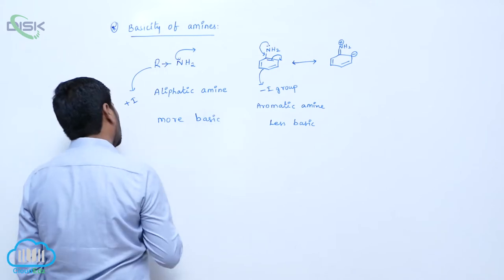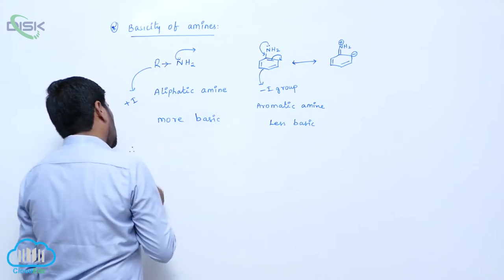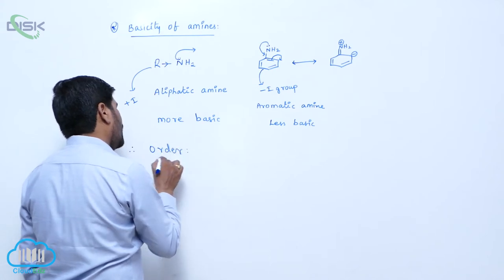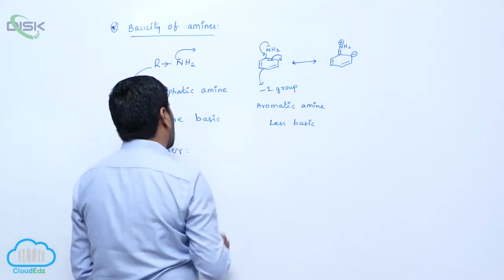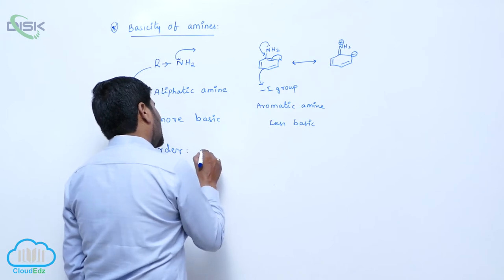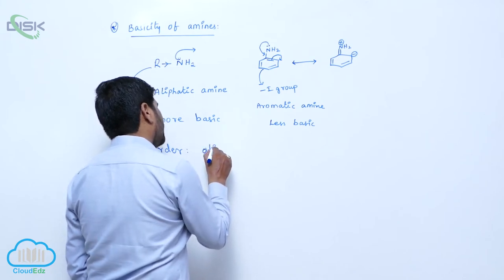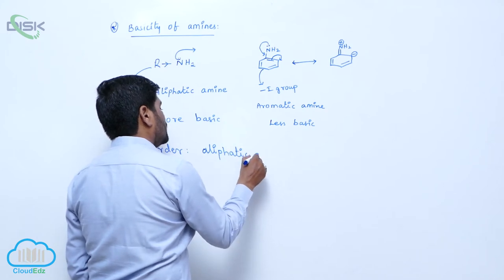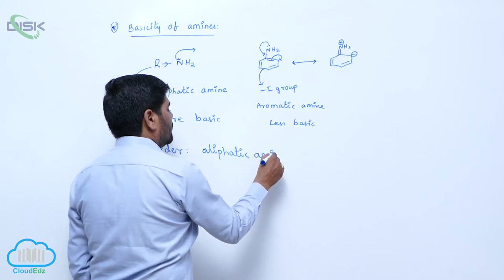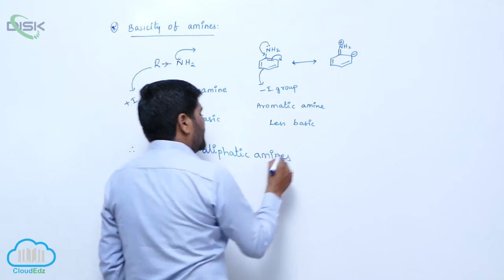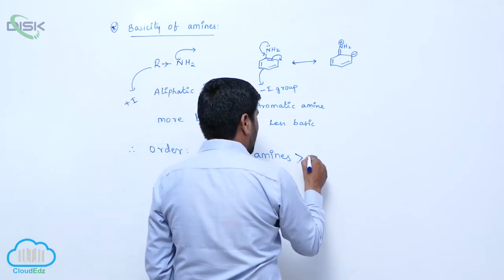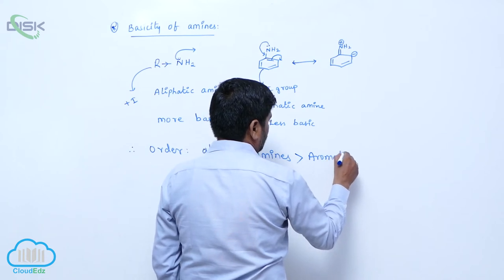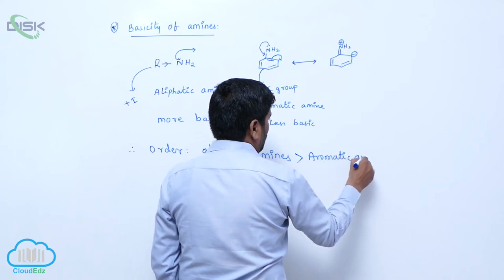In general, order of basicity of aliphatic and aromatic amines. So, aliphatic amines are more basic than aromatic amines.